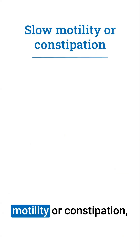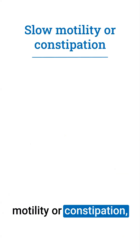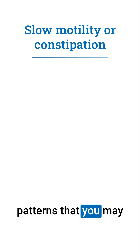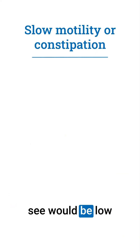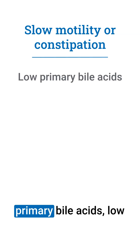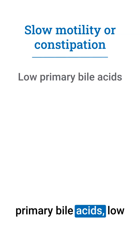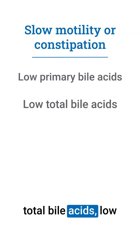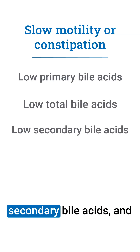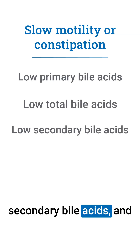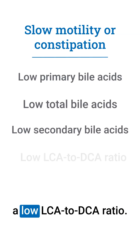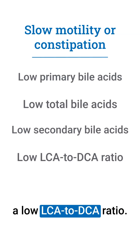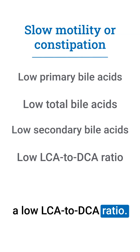If your patient has slow motility or constipation, patterns that you may see would be low primary bile acids, low total bile acids, low secondary bile acids, and a low LCA to DCA ratio. So thank you.